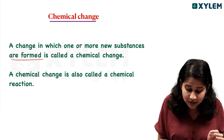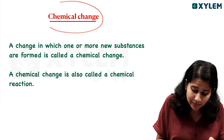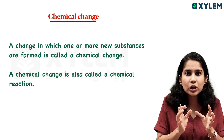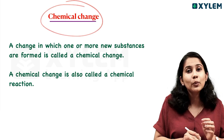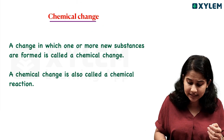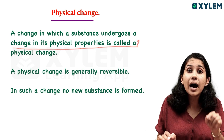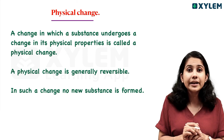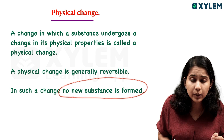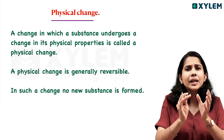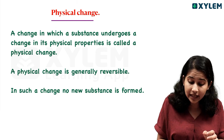A change in which one or more new substances are formed is called a chemical change. A physical change is a change in which a substance undergoes a change in its physical properties. New substances are not formed in a physical change. Physical change is a temporary change.